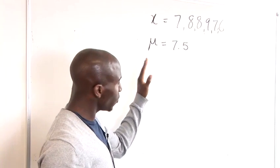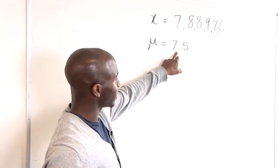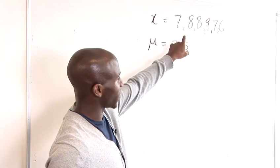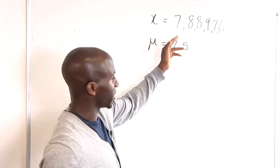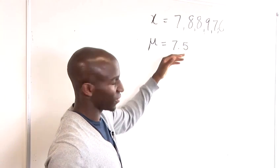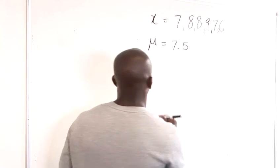Now what we're going to have to do now is stick these distribution values for x, which is the height of kids, and our expected value, which is 7.5, into the equation to see what we get.